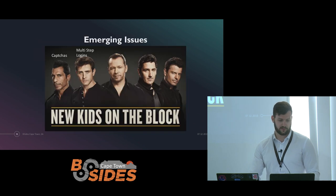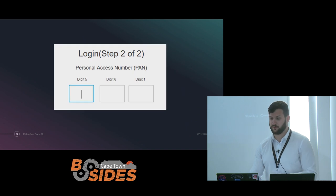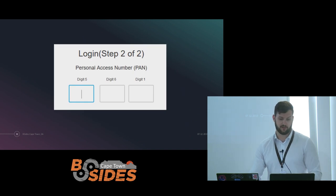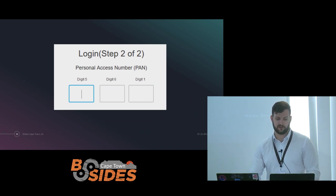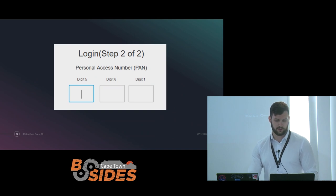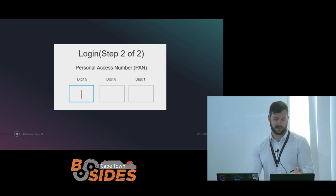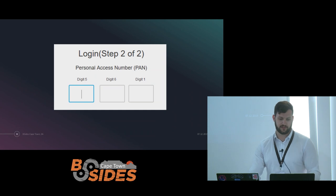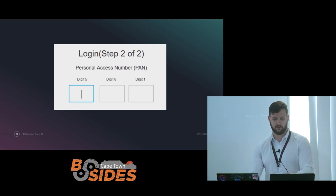We also have multi-step logins. I actually took a picture of this from my bank — it's when they ask for a personal access number or something random you're supposed to know. This is becoming more common. My tip for dealing with it would be to ask if you can set all the digits to the same value — all zeros or all ones — so once you put that into the tool, it knows and will submit them. Some tools allow you to script responses to certain scenarios — you might write a script that responds to whatever digit is necessary.